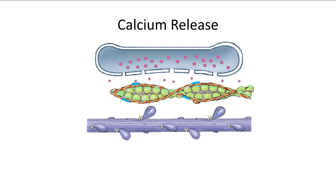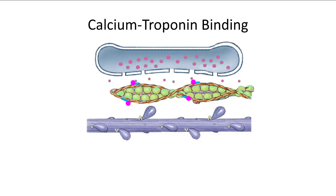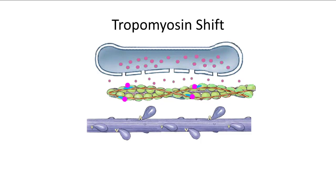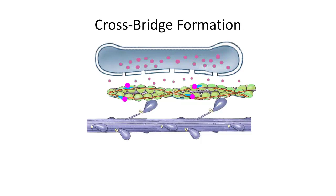When the muscle is activated by a neuron stimulus, the T-tubules depolarize and stimulate the sarcoplasmic reticulum, causing it to release calcium into the area around actin. This calcium binds to the regulatory protein troponin, causing tropomyosin to move over and exposing actin's binding site for myosin. When tropomyosin shifts over, the active site on actin is exposed.